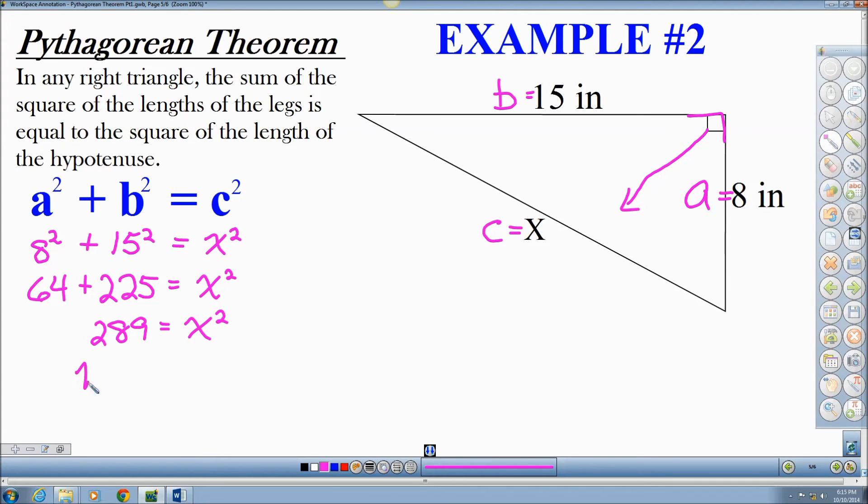Now, once again, I take the positive square root of both sides. So I'm going to take the square root of 289. And I'm going to take the square root of X squared. The square root of 289 is 17. And, of course, this makes X.